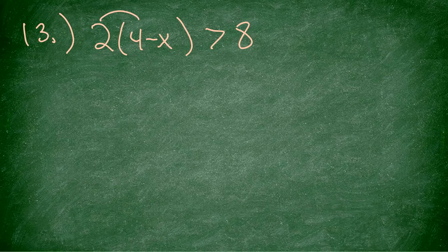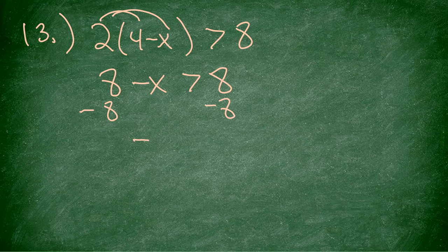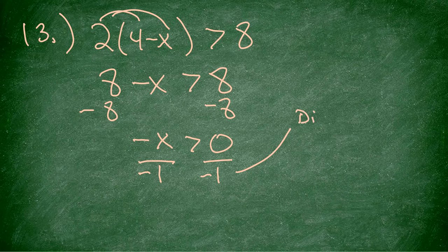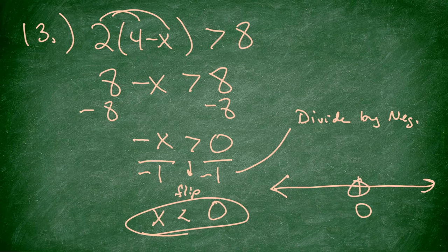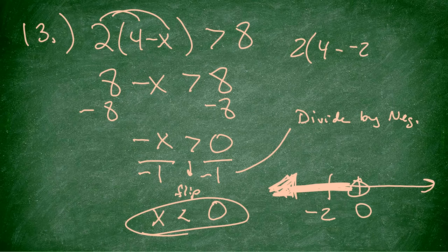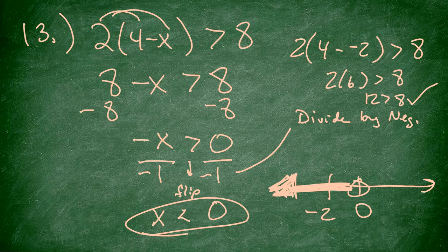Number 13: same concept — I distribute the 2. I get 8 minus x is greater than 8. I subtract 8 from both sides: negative x is greater than 0. I still have to divide by negative 1, and because I'm dividing by a negative I flip the inequality — even though 0 divided by anything is 0, the flip changes which way I shade. So x is less than 0. Open circle at 0, shade to the left. Check negative 2: 2 times (4 minus negative 2) is 12, which is greater than 8. True.